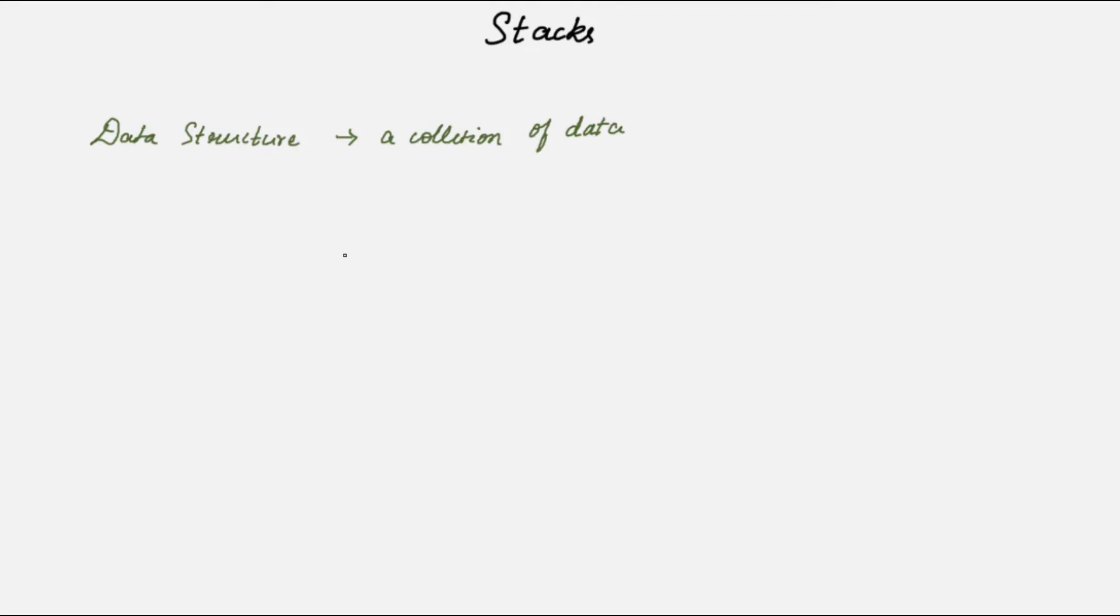A data structure is nothing but a collection of data. Why do we need data structure? Because in most cases we need our data to be organized in a specific format so that it will be easy for us to store, retrieve, and modify the information. A few examples of data structure include stacks, queues, arrays, linked lists, etc.